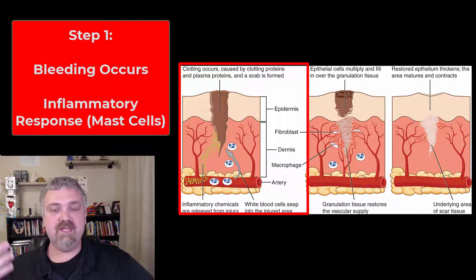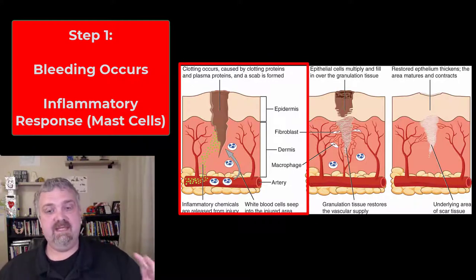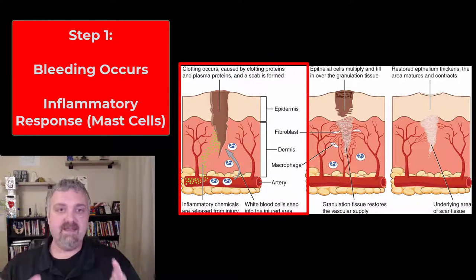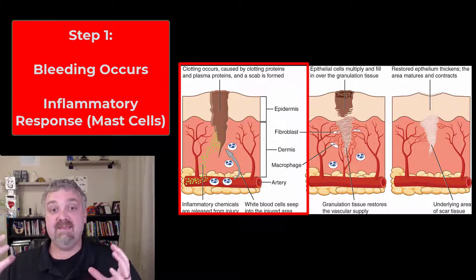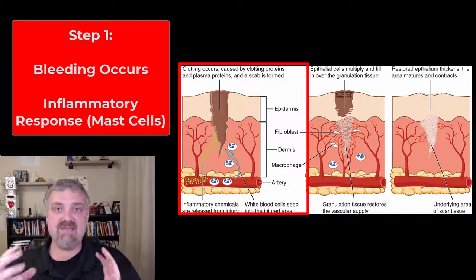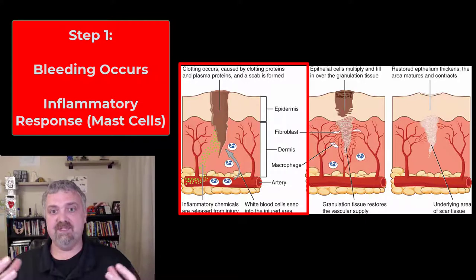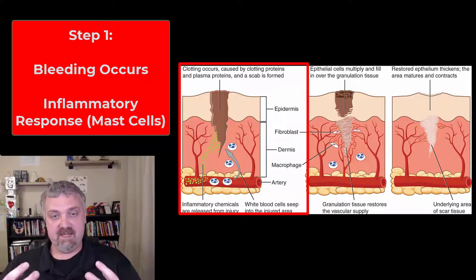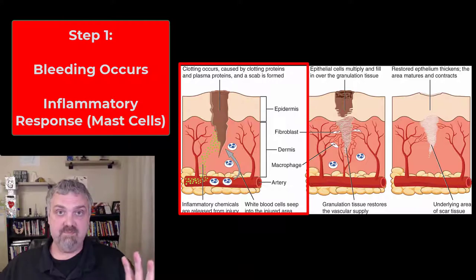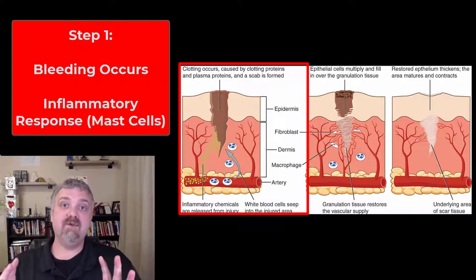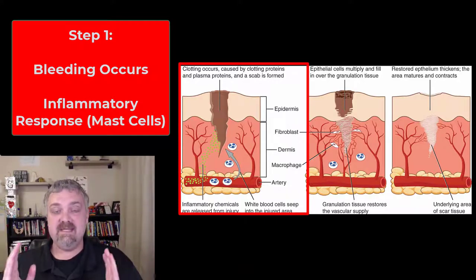So when you first cut yourself, during step one, you're going to have bleeding. Bleeding is going to bring blood to the area that's going to end up clotting and scabbing. At the same time, mast cells are going to release histamine. Histamine is very inflammatory, so you're going to get this bleeding response and inflammatory response. The inflammatory response is going to draw new cells to the area so they can do their jobs coming up.